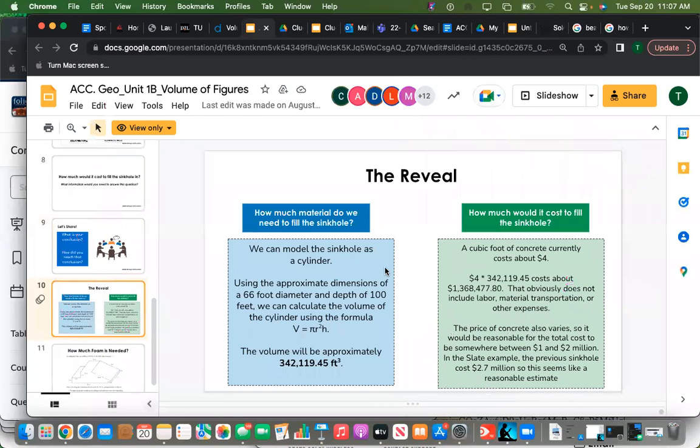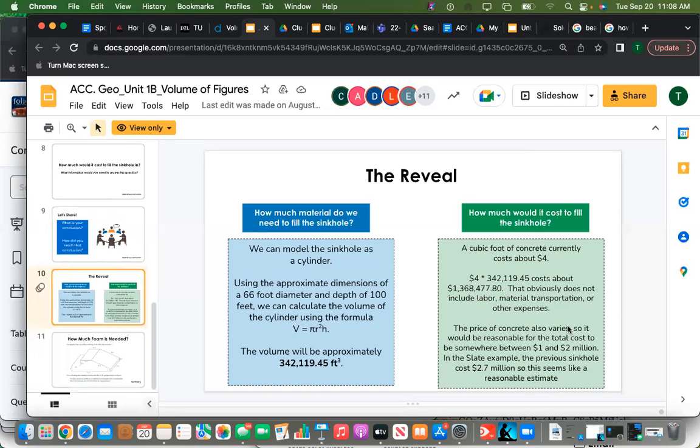Really quick, I want you to take a look at what the actual thing is. We can model the sinkhole as a cylinder, that's what we concluded, using the approximation dimensions of 66 for the diameter and a depth of 100. We can calculate it with 342,119.45 feet to the third power. But how much would it cost to fill the sinkhole? Well, a cubic foot of concrete currently costs about four dollars. Now this was back in the day, four dollars times 342,119.45 is going to cost $1,368,477.80. That's not including somebody actually putting the concrete in because you got to pay that person to do it. And the price of concrete also varies, so it would be reasonable for the total cost to be somewhat between one and two million dollars because it created a sinkhole.